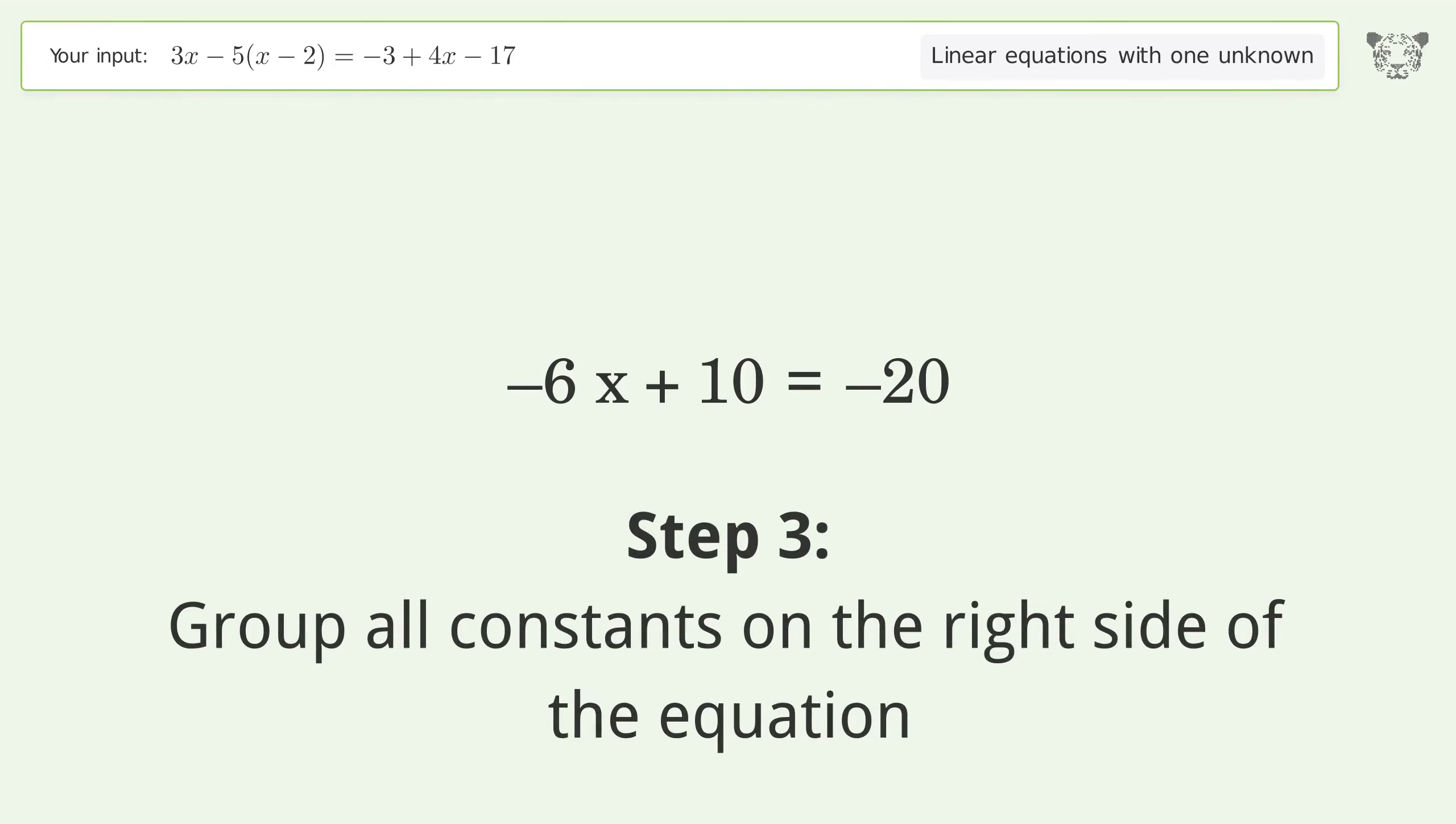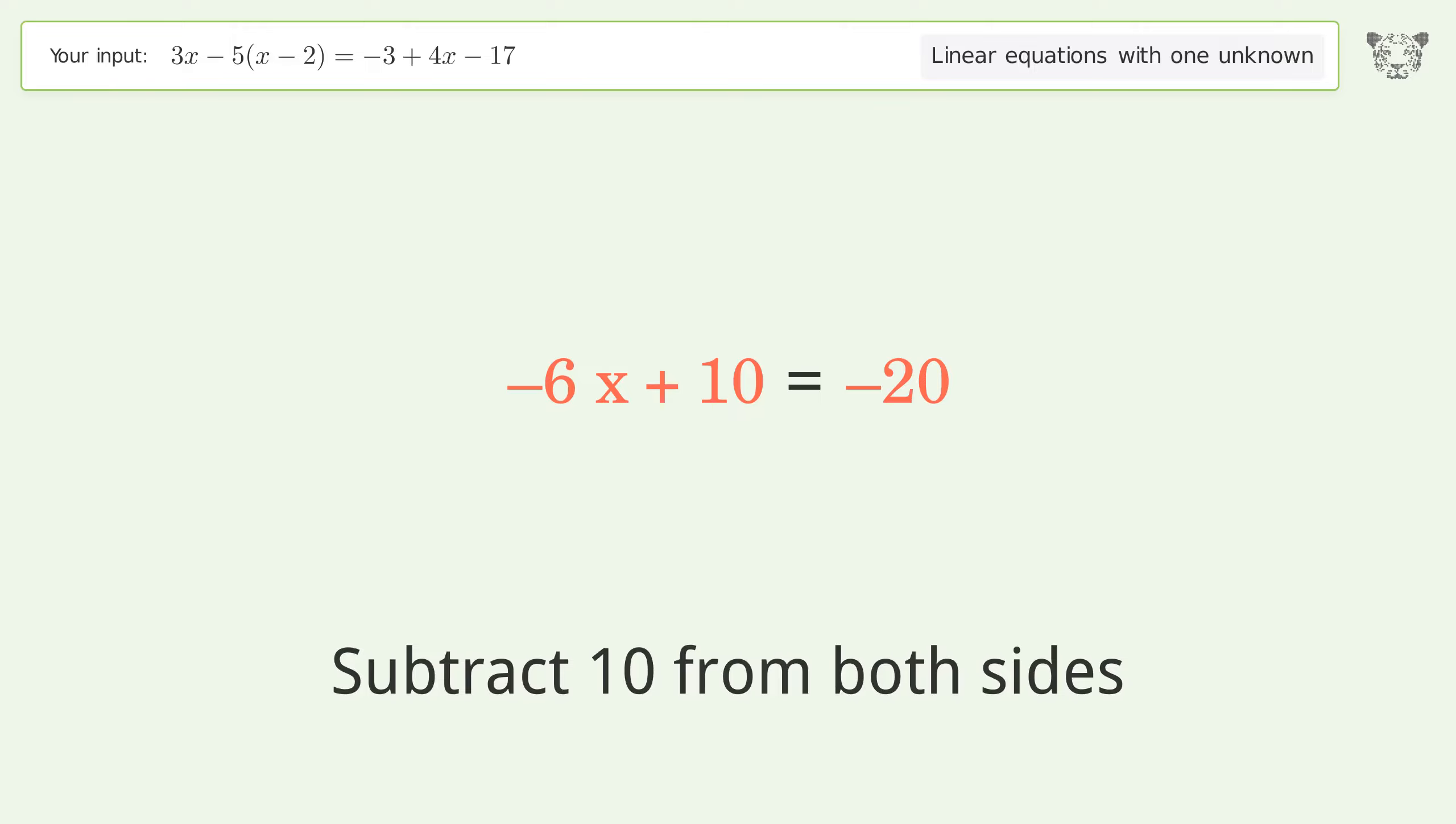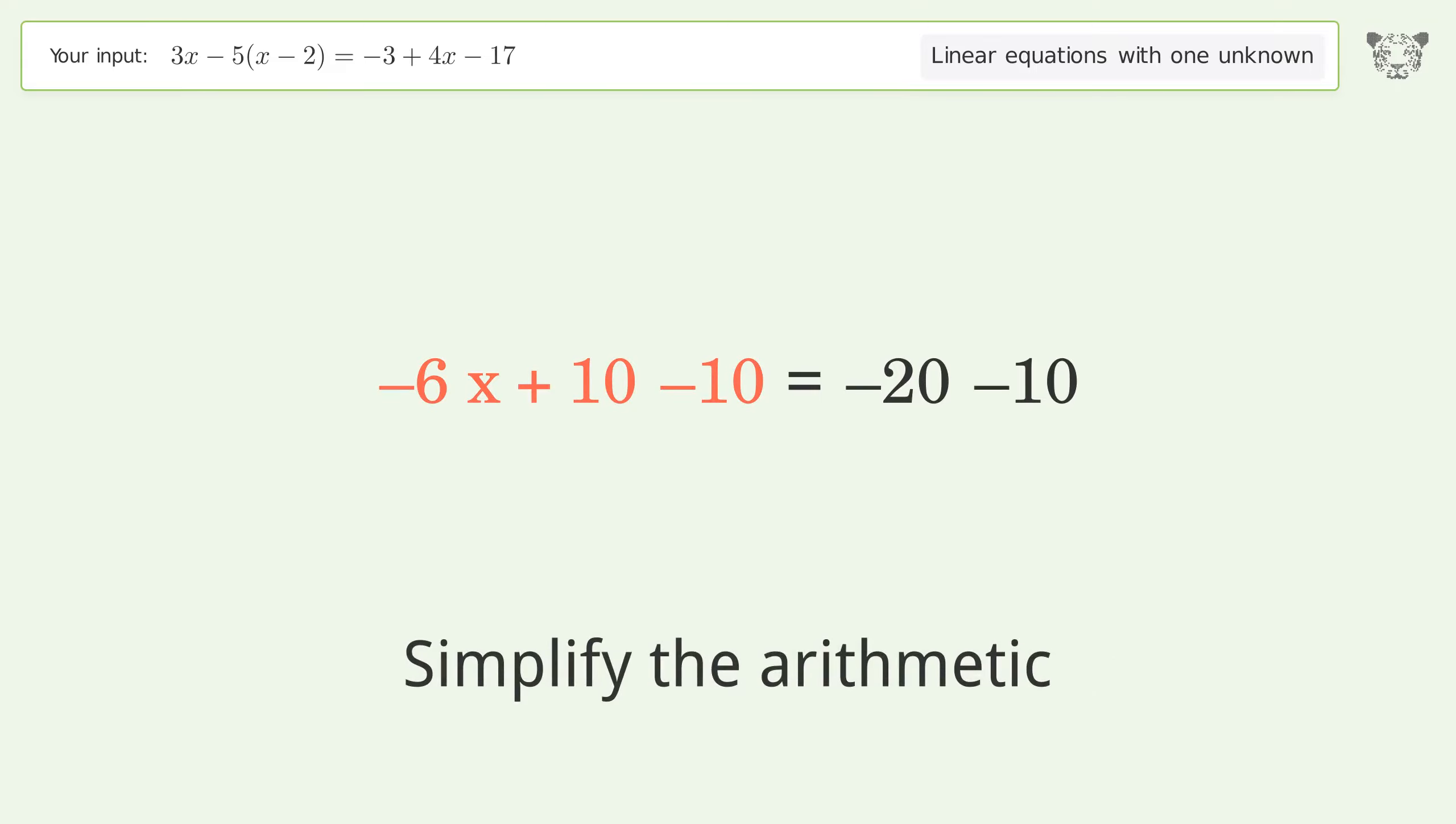Group all constants on the right side of the equation. Subtract 10 from both sides. Simplify the arithmetic.